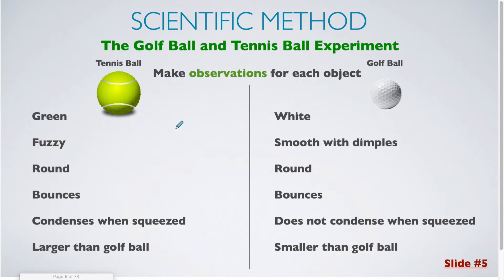Here we are going to be going through a hypothetical experiment involving a golf ball and a tennis ball using the scientific method. The first thing we would need to do is make observations for each of these two objects. Now, if you look at a tennis ball, you might notice its color. It's green. It has a fuzzy texture on the surface. It's round. A tennis ball would bounce if you threw it at the ground. It condenses when squeezed. And we know that it is larger than a golf ball since we are clearly comparing these two objects.